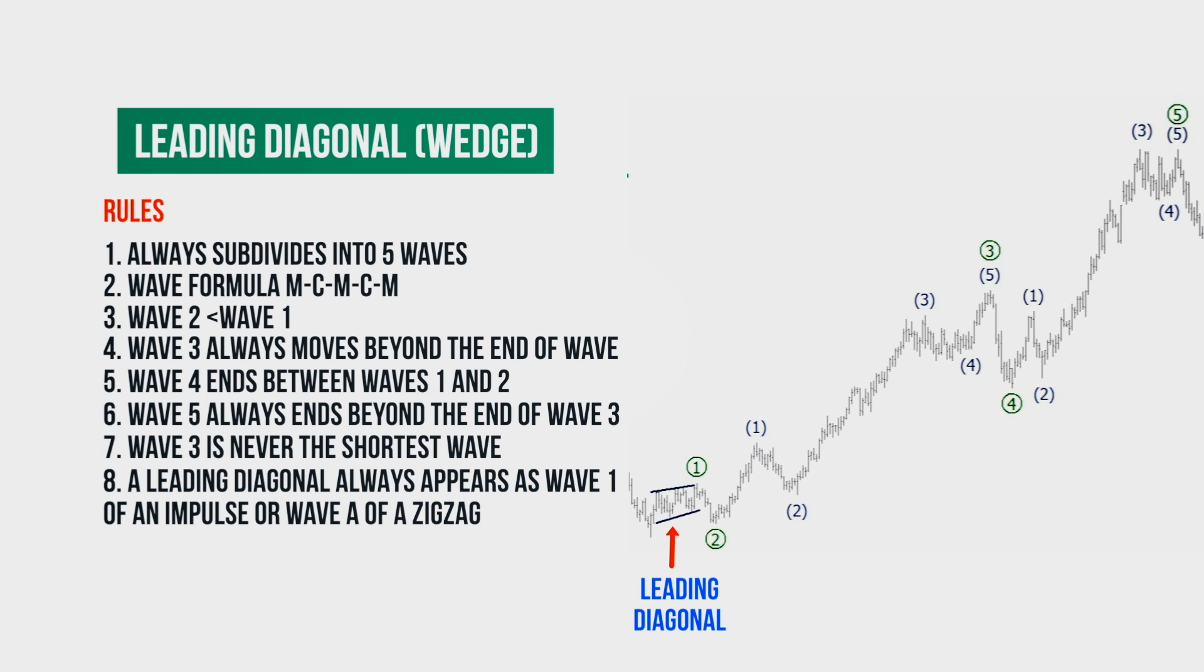When there are a lot of numbers and letters on the chart and we see some large markups, it's very convenient to highlight the leading diagonal by lines. And it brings clarity to the markup and the picture of the market. So we have clarified what the initial diagonal is. In the next lesson we will deal with the last of the three types of waves developing an emotive mode, the ending diagonal.